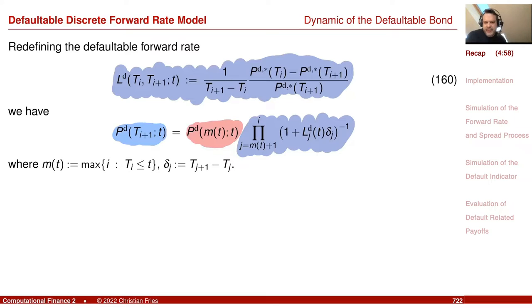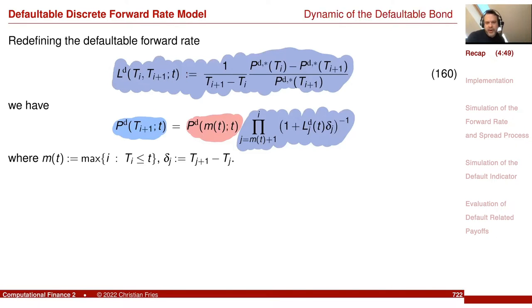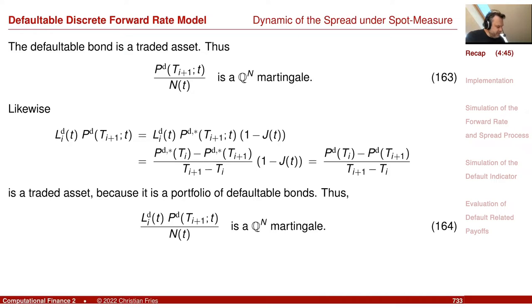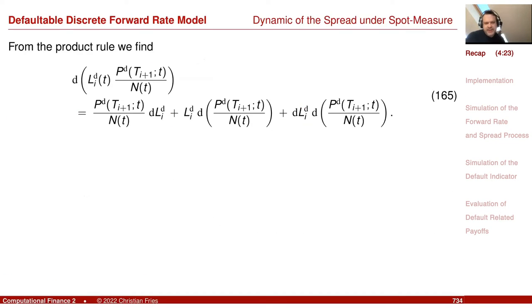Then came the question: what is the drift of these forward rates under our measure QN? We went along the same lines as before — looking at products divided by the numeraire that should be martingales under our measure. The defaultable bond divided by the numeraire is a martingale, and we see again the splitting into continuous part and discontinuous part. In the derivation, we observed that L times defaultable bond divided by the numeraire is also a martingale. Applying Ito's lemma, we got three terms: the drift of L pops out, and there is a covariance term. Since this is a martingale, it has no dt term.